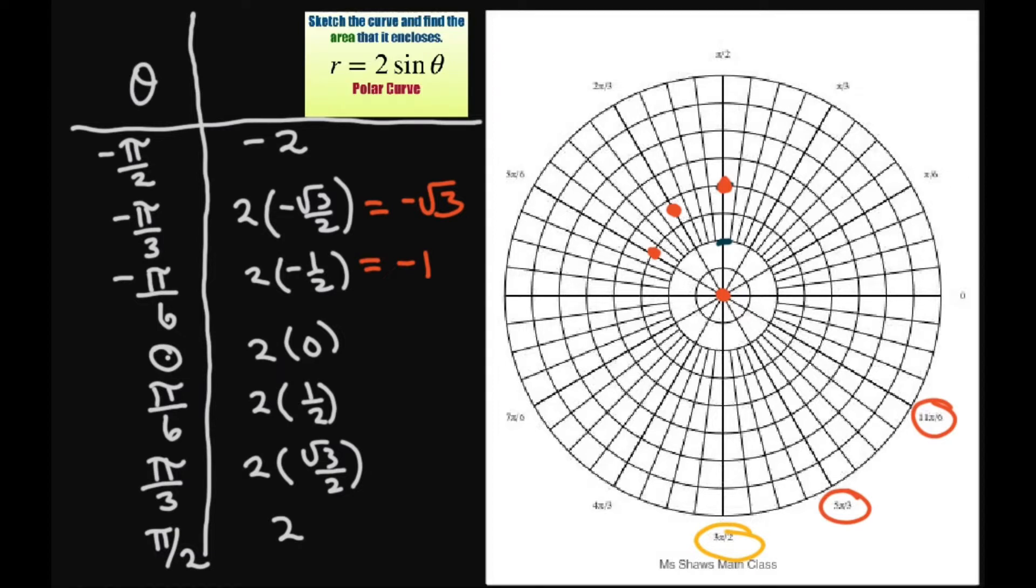This is going to be at 1.73 at pi divided by 6. And at pi divided by 3, it's going to be very close to 2. And then you're back at 2. So here we go. There it is. There's my circle.